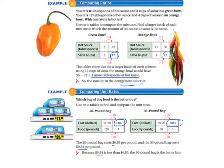Because $0.84 is less than $0.86, the 30 pound bag is the better buy.